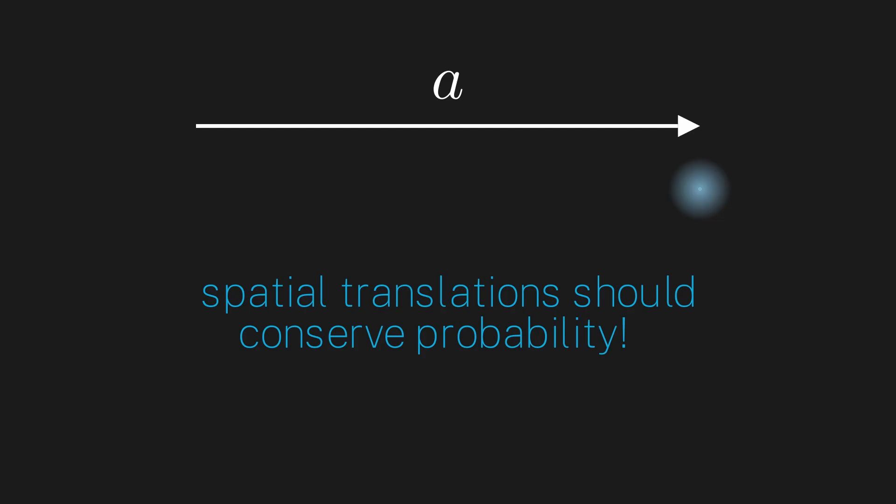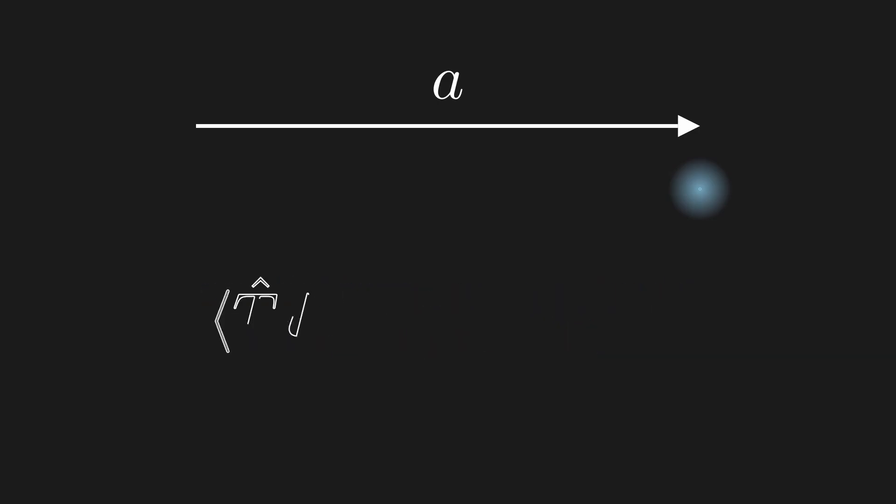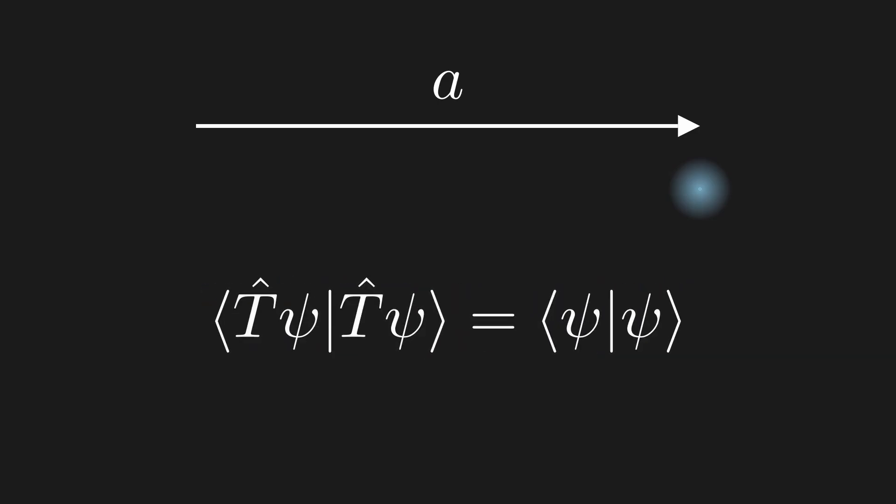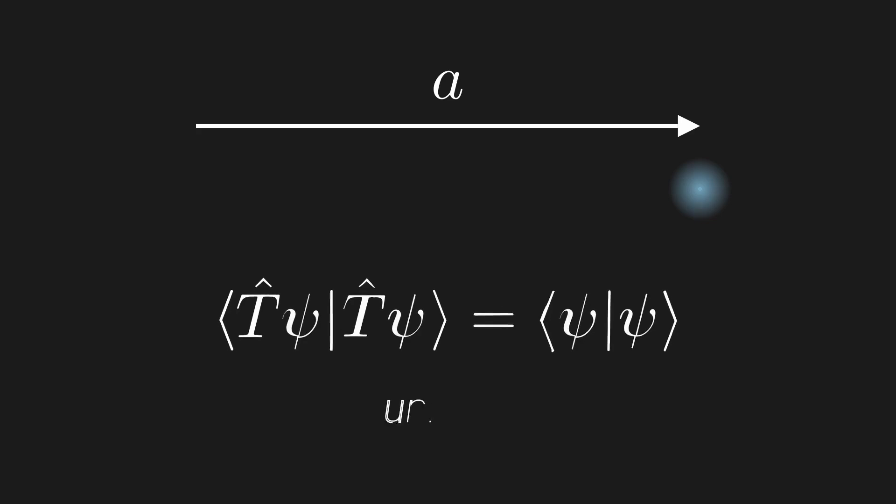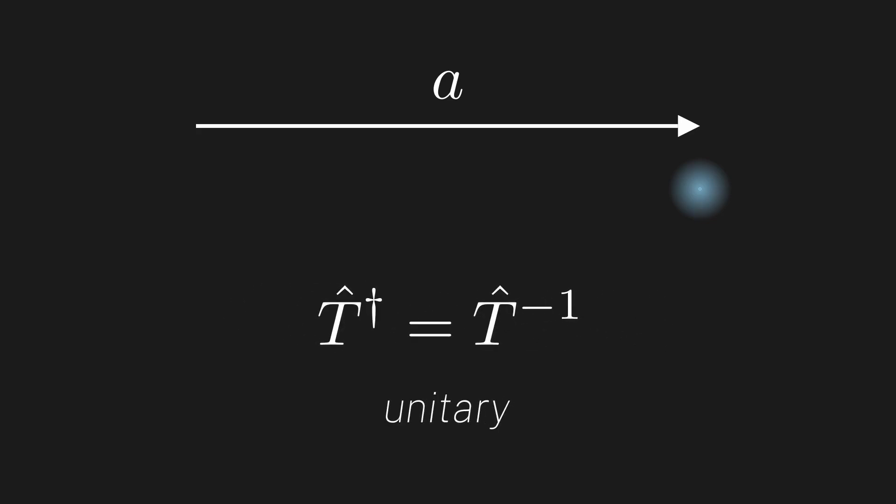Since we calculate the total probability using the inner product of our state with itself, this gives us an equation which must hold true. This is the same equation we had for the time evolution operator last episode. We painstakingly showed that this condition, along with the intuition that translations should be reversible, implies that this operator must be unitary. We went through the full proof back then and it would be 100% identical to the situation we have here. Thus spatial translations must be unitary in quantum mechanics.